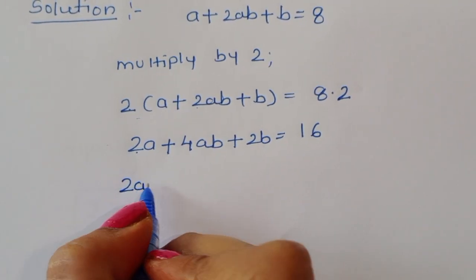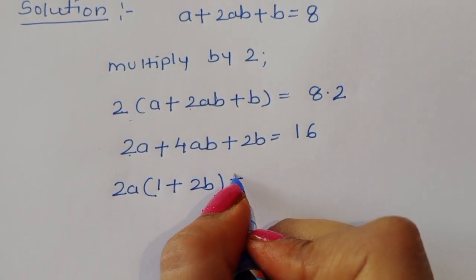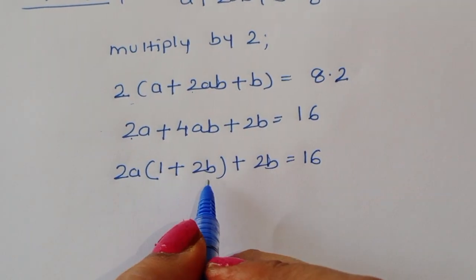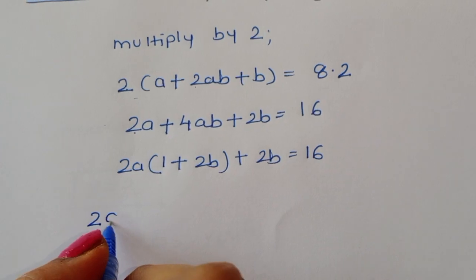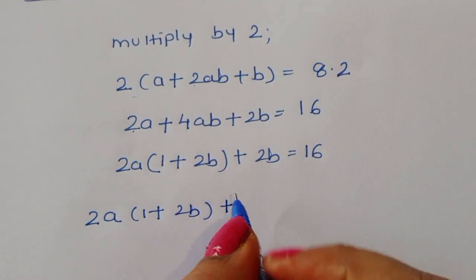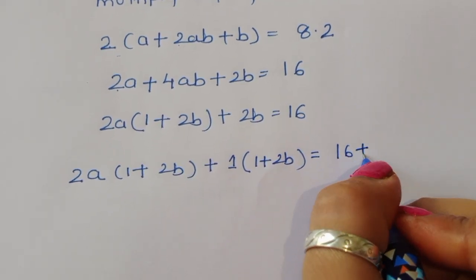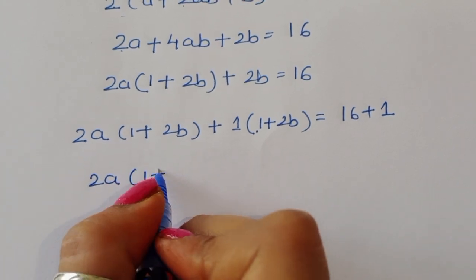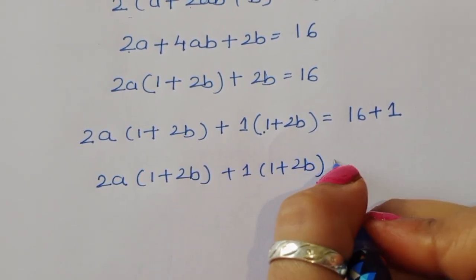Now we take 2a as common: 2a times (1 plus 2b) plus 2b is equal to 16. We then add 1 to both sides, giving us 2a times (1 plus 2b) plus (1 plus 2b) is equal to 16 plus 1, which is 17.